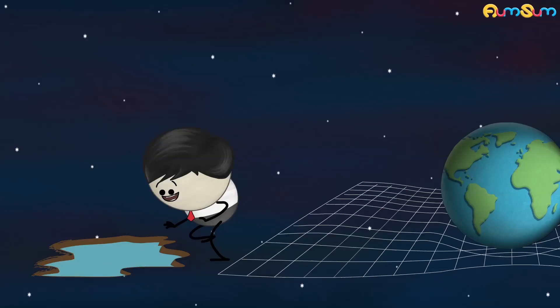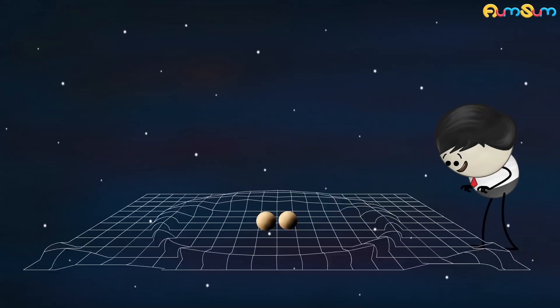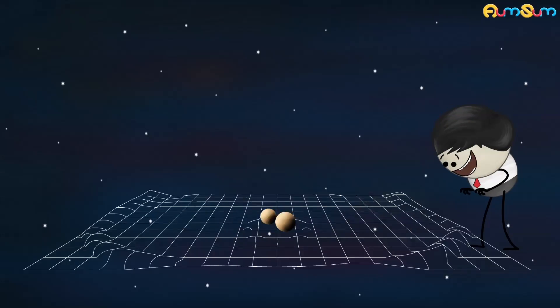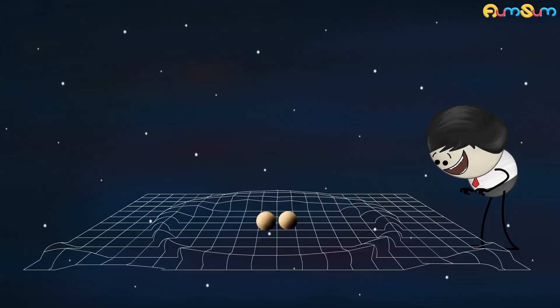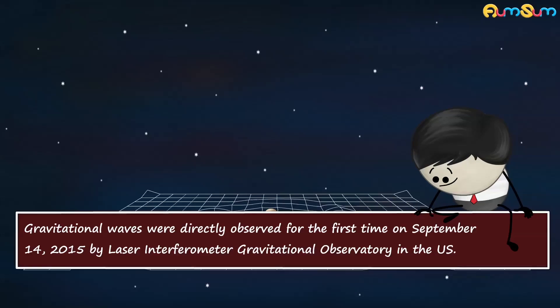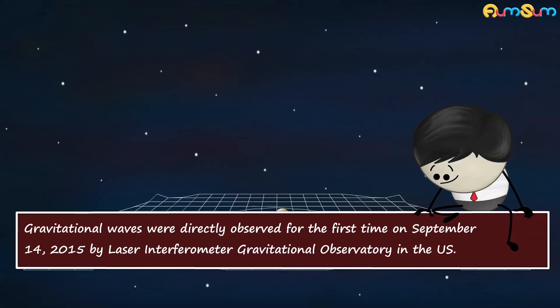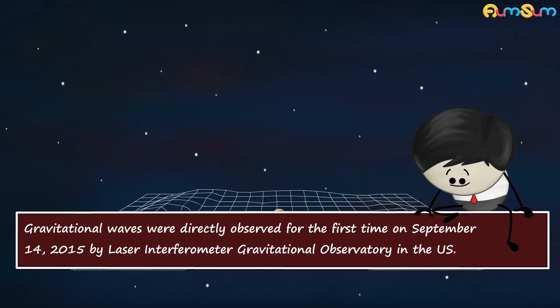First, listen. Just like our hands create ripples in water, moving objects create ripples in space-time. These ripples are termed as gravitational waves. Gravitational waves were directly observed for the first time on September 14, 2015, by Laser Interferometer Gravitational Observatory in the US.